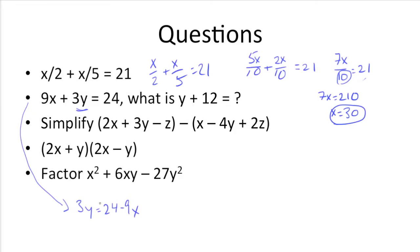All these numbers here, 3, 24, 9, are multiples of 3. So what we can do is divide all of them by 3. So 3 divided by 3 is 1, 24 divided by 3 is 8, and 9 divided by 3 is 3. So we get left with y = 8 - 3x.